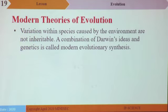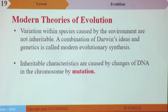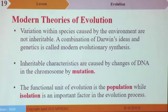Modern theories of evolution hold that variations within species caused by the environment are not inheritable as Lamarck postulated, but that a combination of Darwin's ideas and genetics is called modern evolutionary synthesis. A change of gene due to the environment causes a mutation in the gene, and that mutated gene is transferred to the next generation. Heritable characteristics are caused by changes of DNA in the chromosome by mutation. The functional unit of evolution is the population, while isolation is an important factor in the evolutionary process.